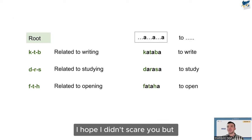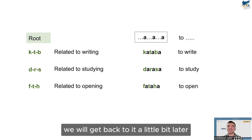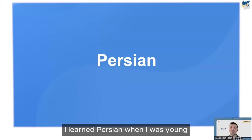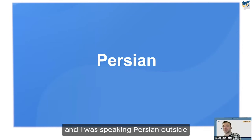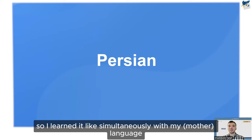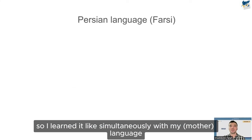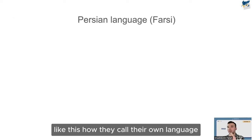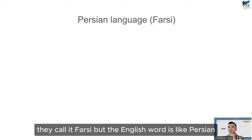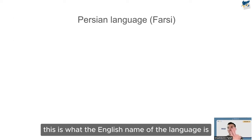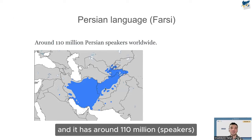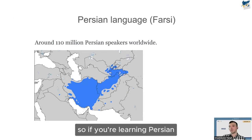Next: Persian — a beautiful language. I learned Persian young, speaking Kurdish at home and Persian outside simultaneously. It's also called Farsi — that's what Iranians call it themselves; 'Persian' is the English name. It has around 110 million speakers, so learning Persian also gives you exposure to Urdu and other languages influenced by Persian.